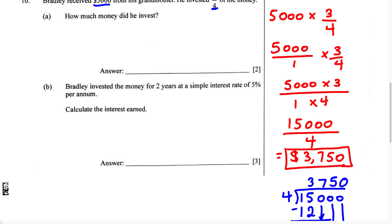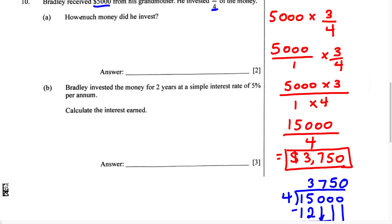Don't forget to write your answer in the space provided. For Part A, how much money did he invest? The answer is $3,750.